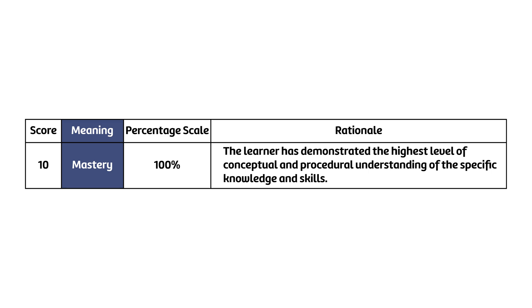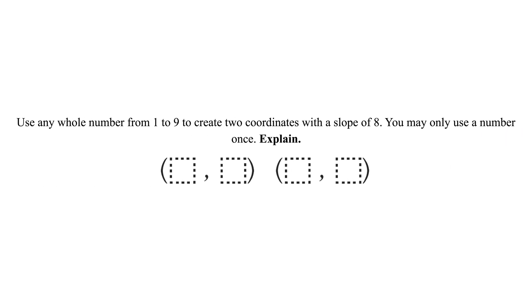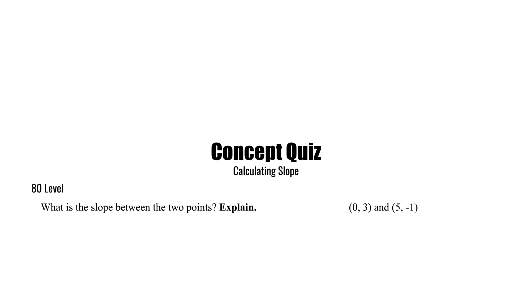Finally, let's take a look at a mastery level question. The category represents a 10, or 100 in the gradebook. Our rationale is that the learner has demonstrated the highest level of conceptual and procedural understanding of the specific knowledge and skills. We want a question that is challenging enough so that if a student does well on it, we're comfortable they've mastered the concept. Here's the example from the slope quiz — it's an open middle style question, which provides a great opportunity for students to apply their learning. If a student successfully reasons through this question, they most likely know the ins and outs of the concept.